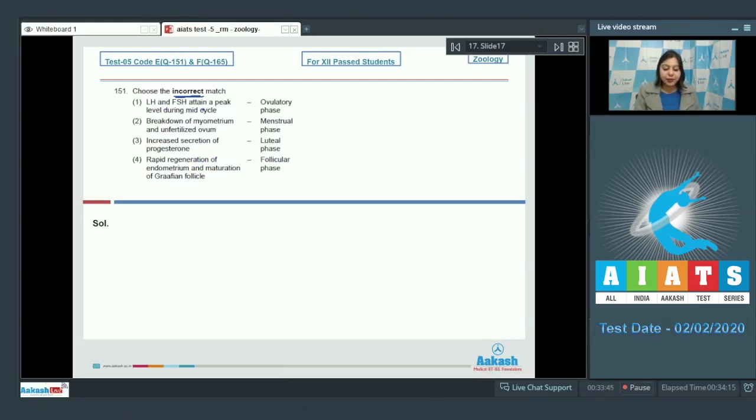Number 1. LH and FSH attain a peak level during mid cycle, that is ovulatory phase. This is correct as ovulation occurs due to LH surge.